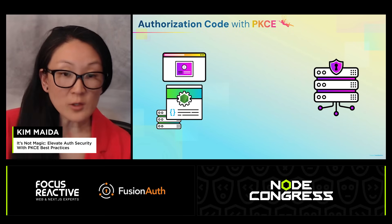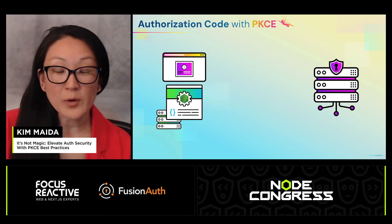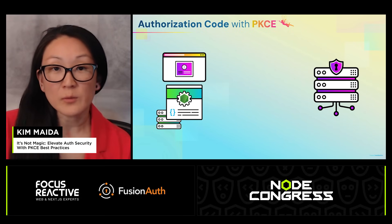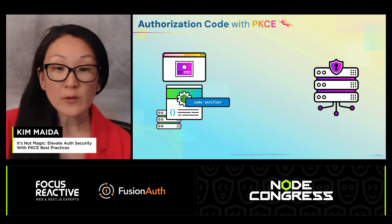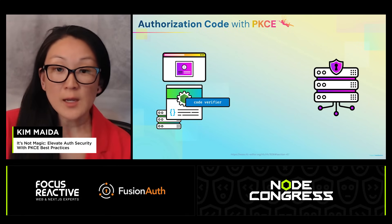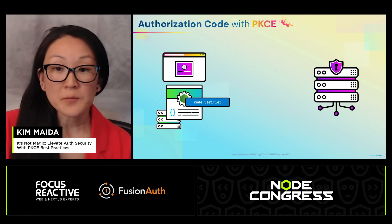When a user comes to your site in the browser, they're going to receive a prompt to log in. On the client side, you're going to create a high-entropy random string. This is called our code verifier.